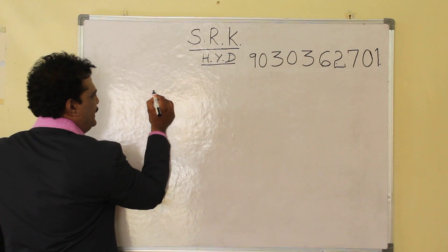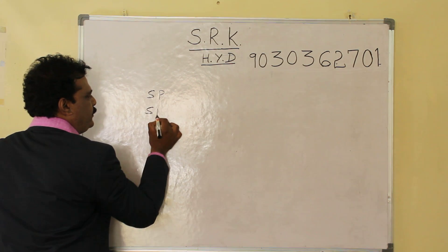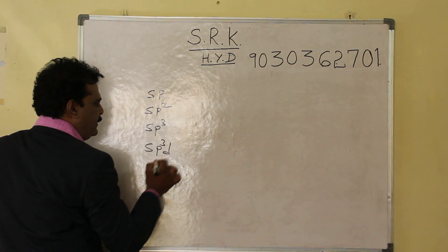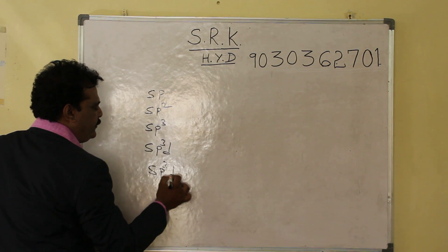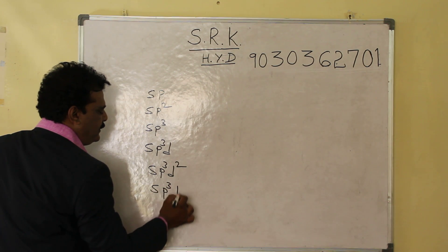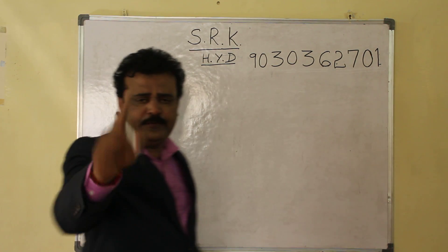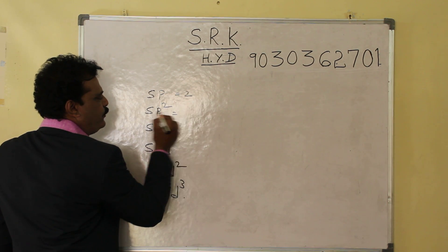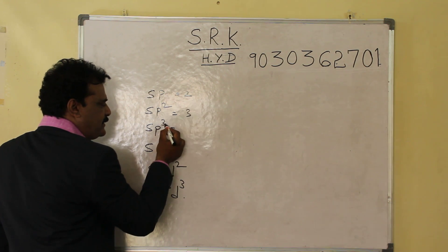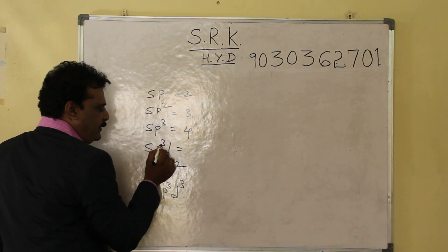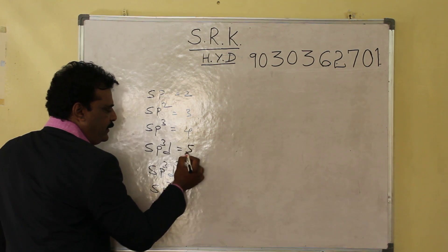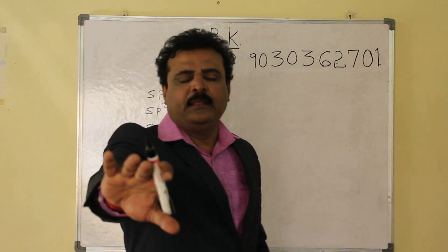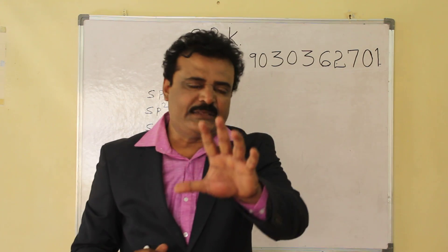I'm going to write SP, SP2, SP3, SP3D, SP3D2, SP3D3. Here is a little simple trick: for SP the number is 1+1=2, for SP2 the number is 2+1=3, for SP3 the number is 3+1=4, for SP3D the number is 3+1+1=5, and for SP3D2 the number is 6.